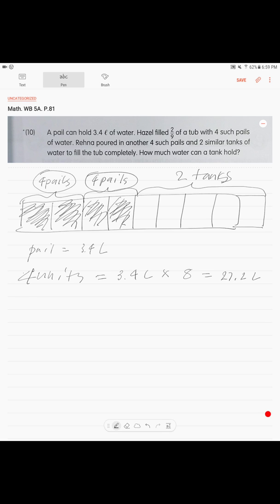So, from here, we calculate 1 unit, how much is 1 unit? We take our 27.2 divided by 4.